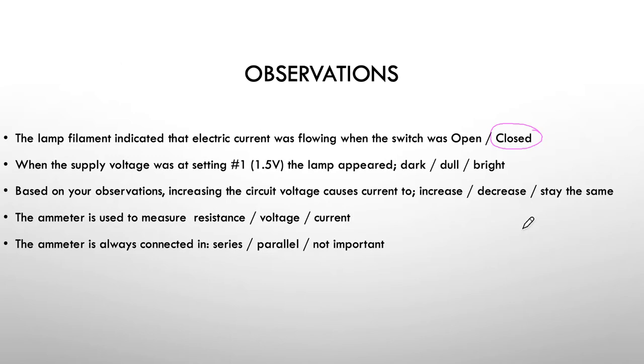When the supply voltage was at a setting of number 1 or at 1.5 volts, what was the lamp's appearance? Was it dark, was it off, was it dull, was it bright? So at 1.5 volts if you remember, it wasn't off but it was dull. And again based on your observations, increasing the circuit voltage causes current to do what?